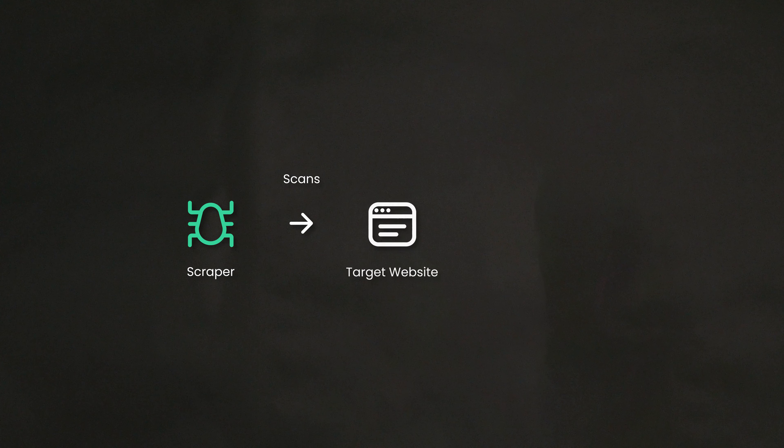Web scraping begins with crafting code tailored to your project or choosing a ready-made scraping tool. Once the scraper is ready, it scans the target website and extracts the relevant information. The selection process is essentially data collection.